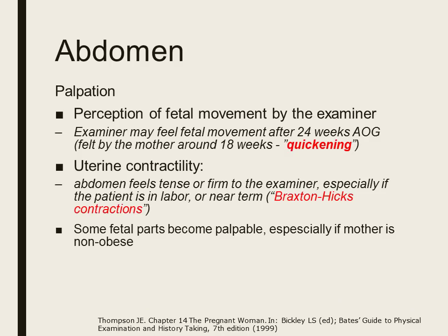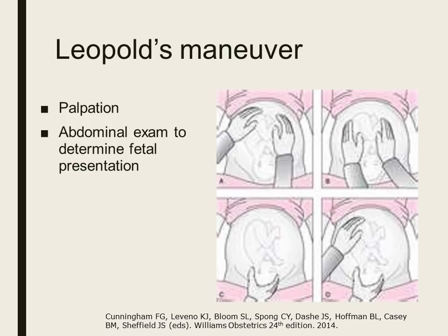We also palpate the abdomen to feel for fetal movement. The examiner may feel fetal movement after 24 weeks AOG. However, the mother can perceive fetal movement as early as 16 to 18 weeks — that is called quickening. We can also palpate for uterine contractility, where the abdomen feels tense or firm, especially if the patient is in labor or near term. We can also palpate for fetal parts, especially if the mother is not obese. This brings us to Leopold's maneuvers.